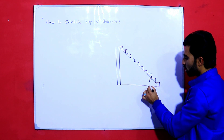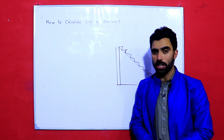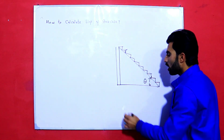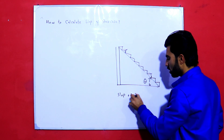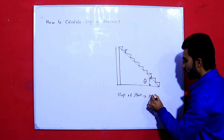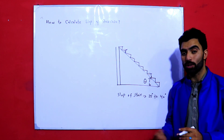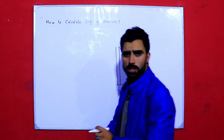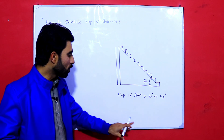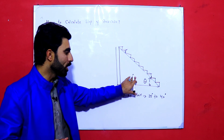So how to find the slope of staircase — this theta — how to find slope of staircase. First of all, I will tell you the slope of staircase should be between 25 to 40 degrees. It should not be more than 40 degrees and it should not be less than 25 degrees, because this is the suitable range by which you can climb comfortably.